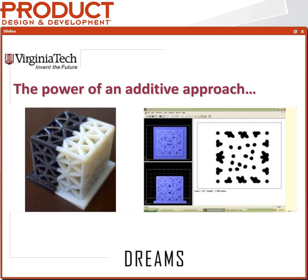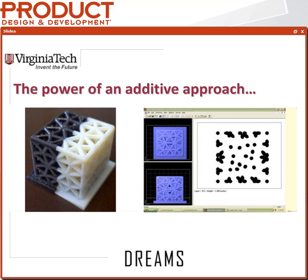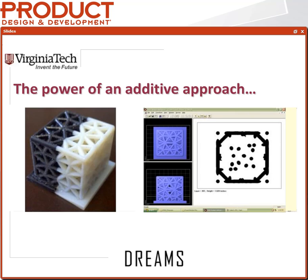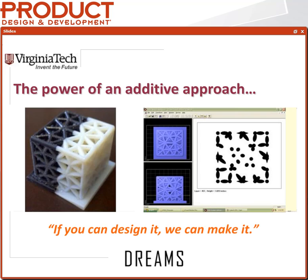On the left is an object printed on an Objet Connex, and on the right is an animation showing every fifth layer. Traditionally there's no way to injection mold, machine, or cast that — but to our printer it's just a series of dots stacked on top of one another, growing into truss-like structures. In our lab we have this tongue-in-cheek Field of Dreams reference: 'if you can design it, we can make it.' Manufacturing has traditionally been the roadblock to realizing new ideas due to manufacturing constraints. With additive manufacturing those constraints are almost completely gone — the real challenge is just conceiving the design and creating it in CAD.